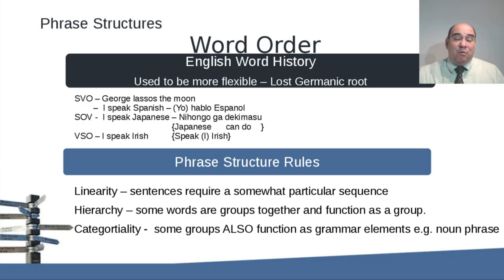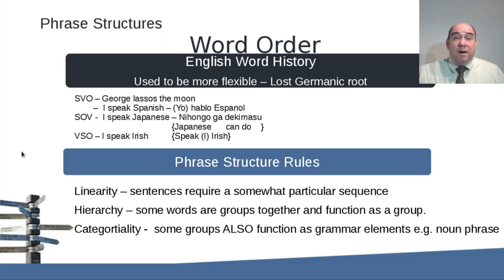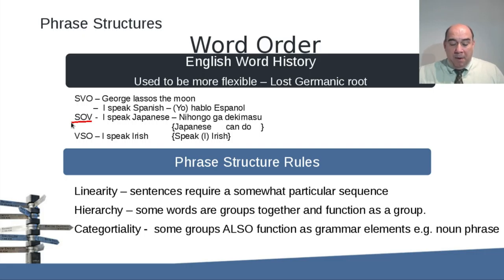Most Romance languages and most of Europe use the subject-verb-object structure. Chinese and Hindi also use this form. There are some variations when you get into the nitty-gritty, but your basic overview is subject-verb-object. The next, more popular one is subject-object-verb.